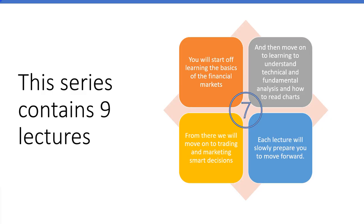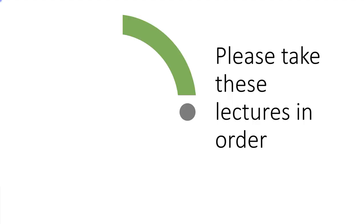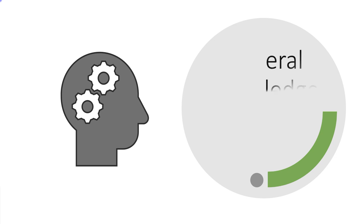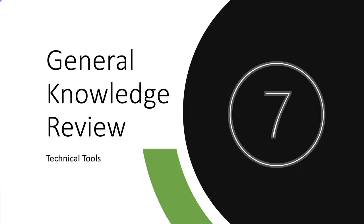This series of lectures is a series of nine lectures; this is lecture number seven. You start off learning the basics of the financial markets, then move on to technical and fundamental analysis, how to read charts, and then making smart trading and investing decisions. It's very important that you take these lectures in order so you build a deep understanding — the ABCs — so you can move forward in trading.